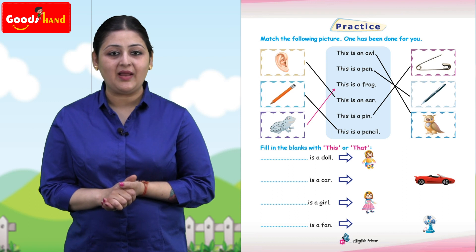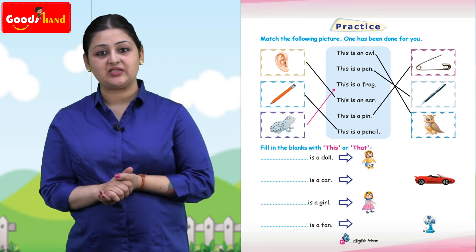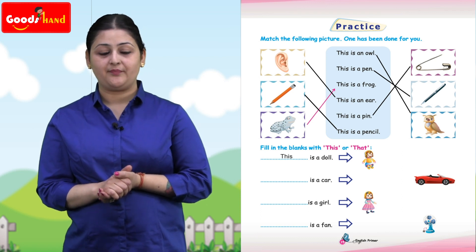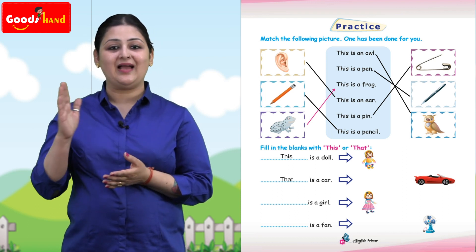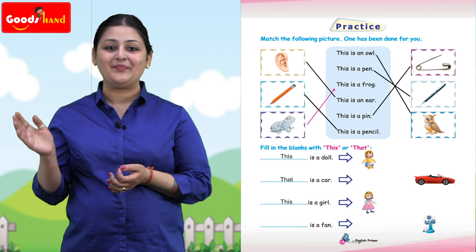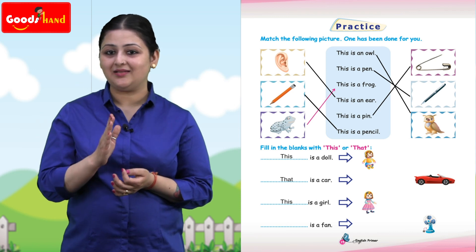Fill in the blanks with this or that. This is a doll, that is a car. This is a girl, that is a fan.